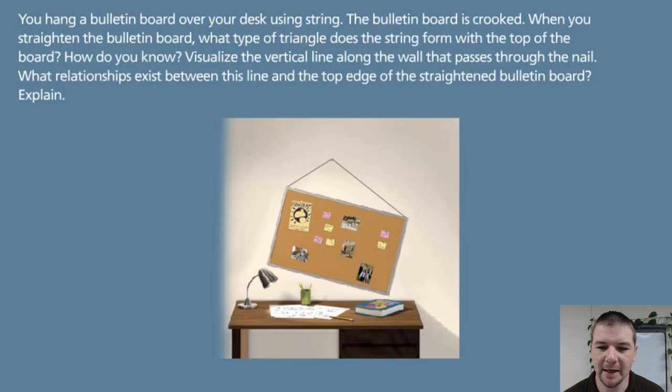Visualize the vertical line along the wall that passes through the nail. What relationships exist between this line and the top edge of the straightened bulletin board? Explain.